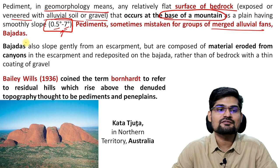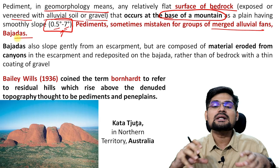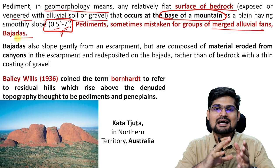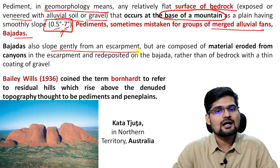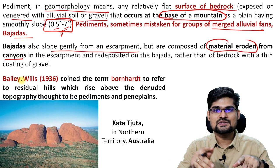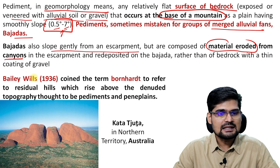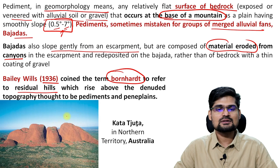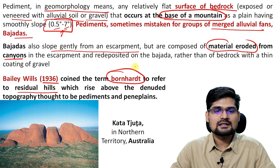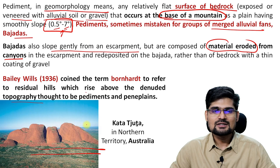Remember bajadas are not the pediments — they are the next portion of piedmont plains. Bajadas are basically depositions of all those debris material after the pediments. Bajadas also slope gently from the escarpment but are composed of material eroded from canyons. The difference is: the bedrock which is part of the same rock structure that is now eroded is pediment, but the erosional materials deposited on the slope make bajadas. Bailey Willis in 1936 coined the term bornhardt to refer to residual hills — like inselbergs in Penck's theory — which rise above the denuded topography of pediments or pediplanes.